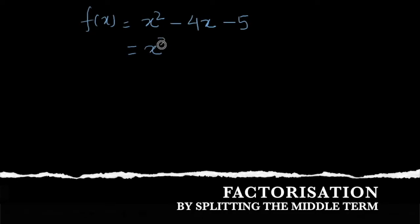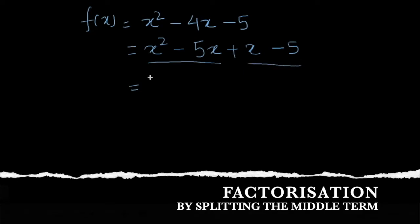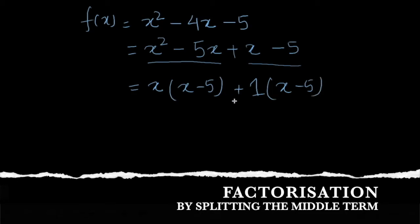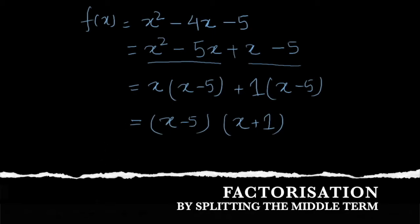So we split -4x into -5x + x, giving us x² - 5x + x - 5. We take x common from the first two terms and 1 common from the last two, getting x(x - 5) + 1(x - 5). Taking (x - 5) common from both terms, we get (x - 5)(x + 1). This is how we factorize x² - 4x - 5 into two factors.